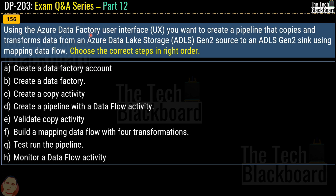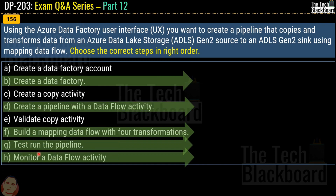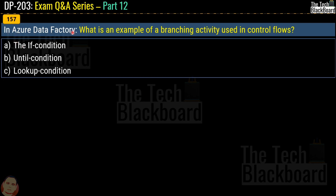Question 156: using the Azure Data Factory UI, you want to create a pipeline that copies and transforms data from Azure Data Lake Storage Gen2 source to Azure Data Lake Storage Gen2 sink using mapping data flow. Choose the correct steps in the right order. The correct answer is options B, D, F, G, and H — please note the correct order of all these activities. Question 157: which is an example of a branching activity used in control flows? Options are IF condition, UNTIL condition, or LOOKUP condition. The correct answer is option A — the IF condition.